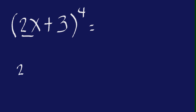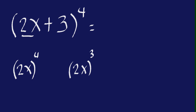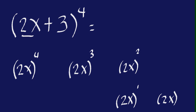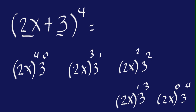We will start with 2x raised to the 4th power, and keep decreasing the exponent by 1. So we have 2x to the 4th, then 2x to the 2nd power, then 2x to the 1st power, and then 2x to the 0 power. When you get to the number 3, you reverse the pattern — starting with 0, then 1, 2, 3, and then 4.